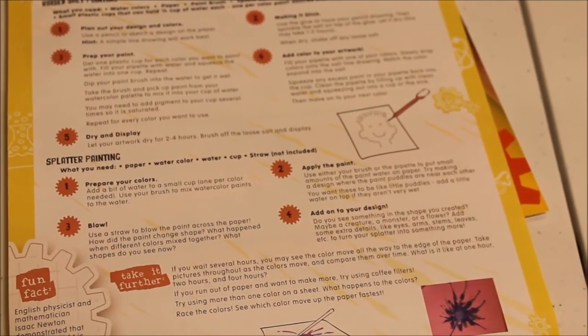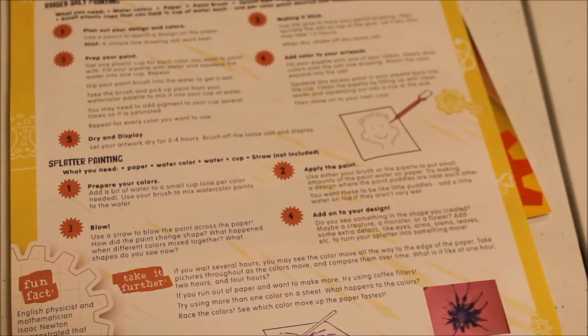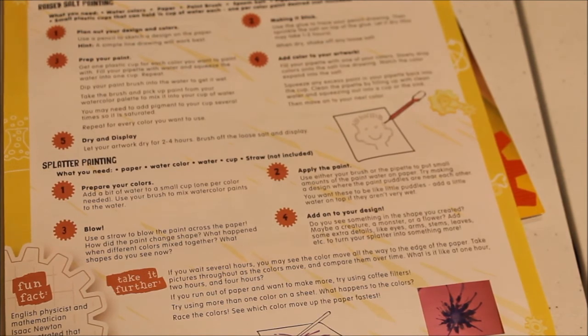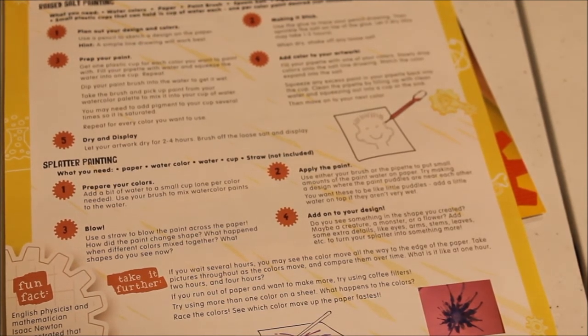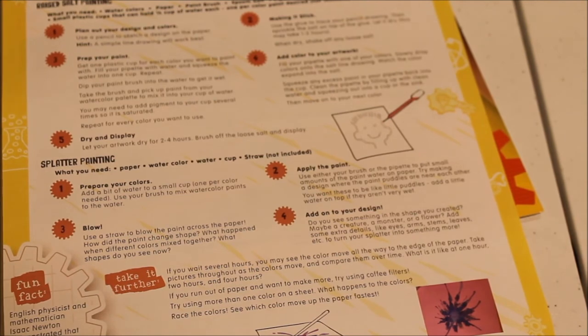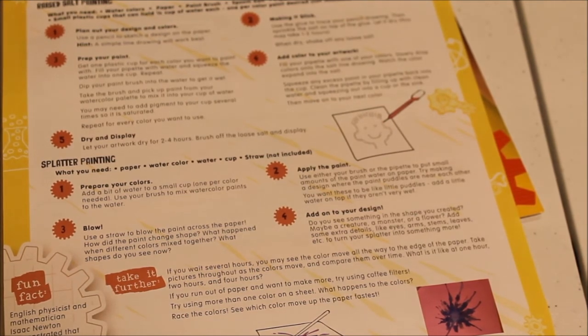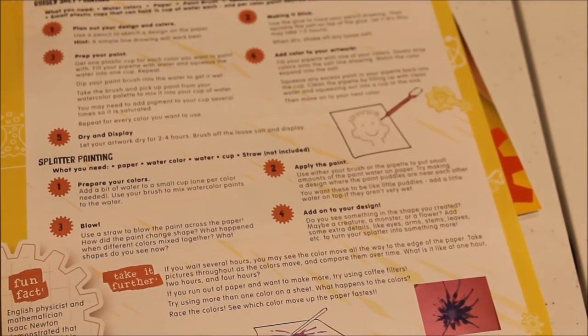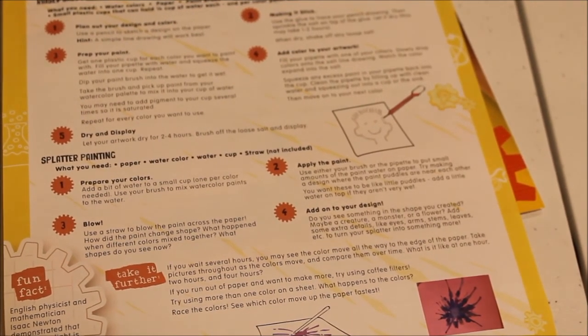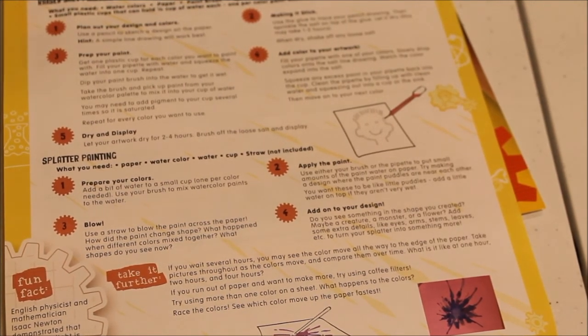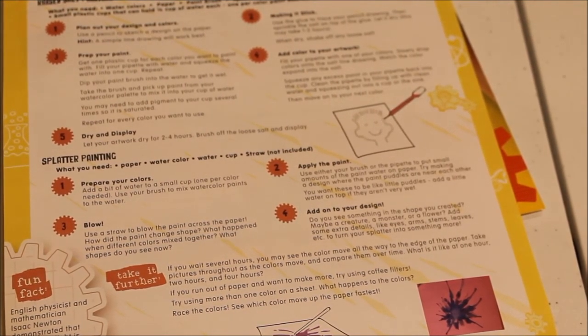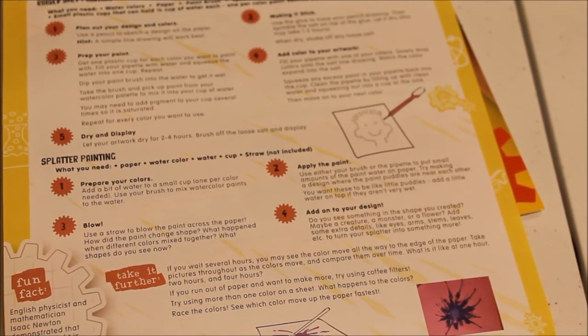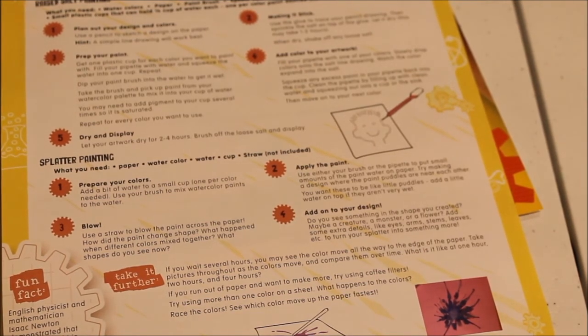I'm just going to read you the directions. Step one says prepare your colors. Two says apply the paint: either use your brush or pipette to put small amounts of paint water on paper. Try making a design where the paint puddles are near each other. You want these to be little puddles. Add a little water on top if they aren't very wet. Three: blow. Use a straw to blow the paint across the paper. Then ask a few questions: how did the paint change shape? What happened when different colors mixed together? What shapes do you see now?